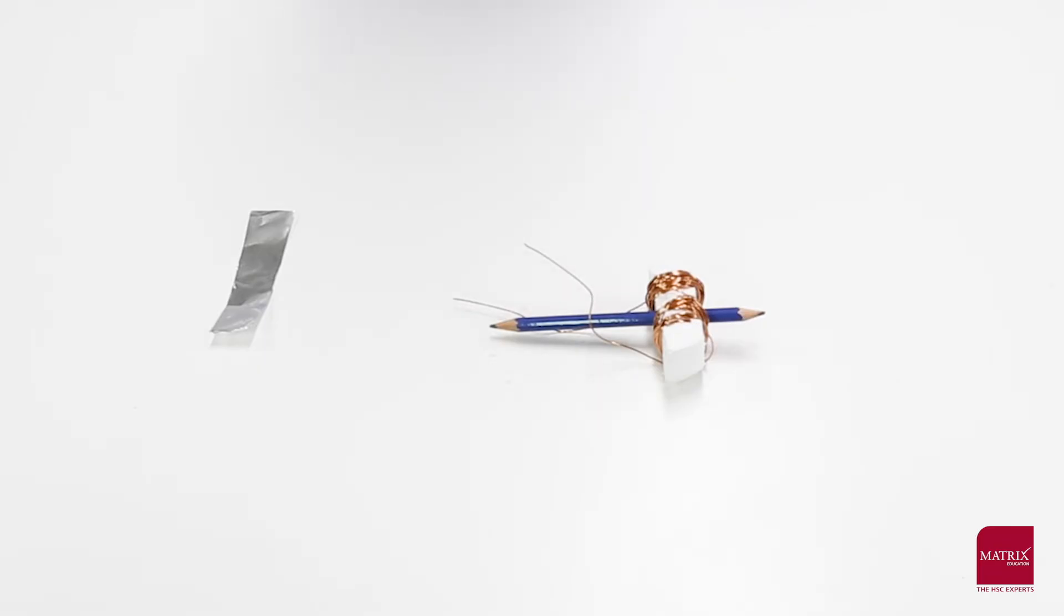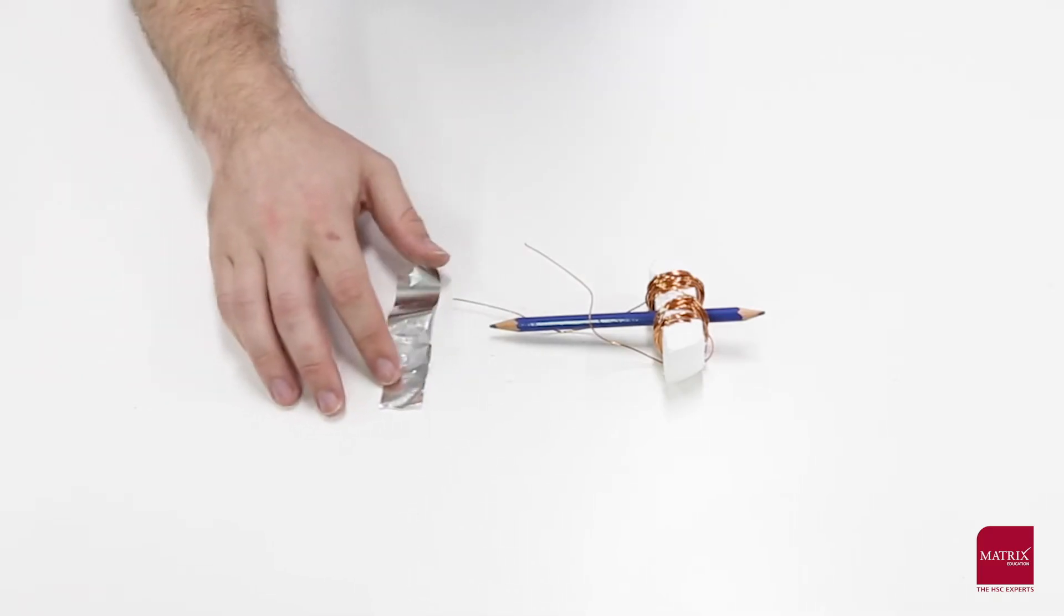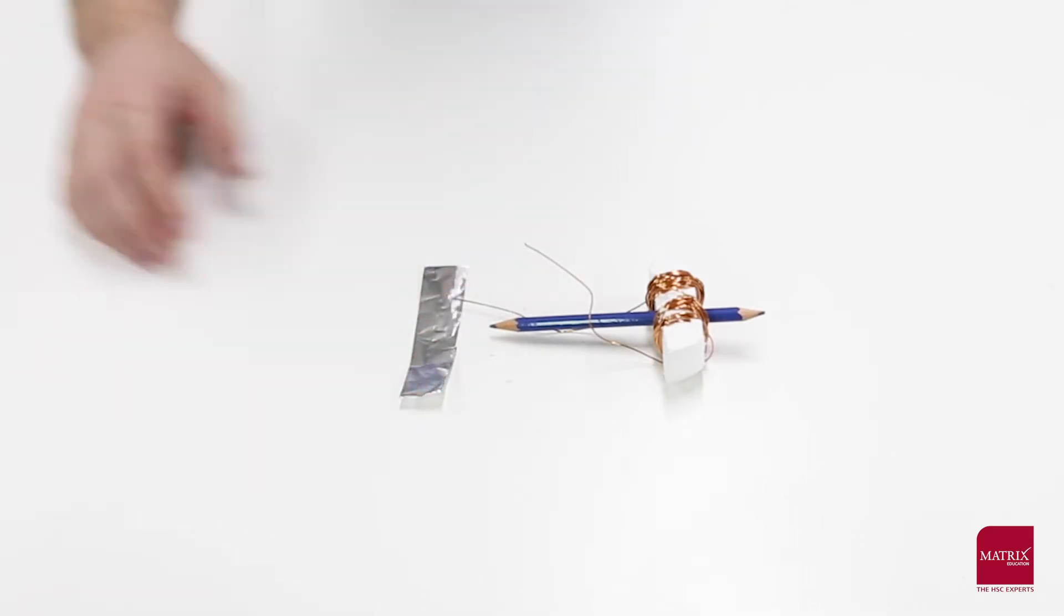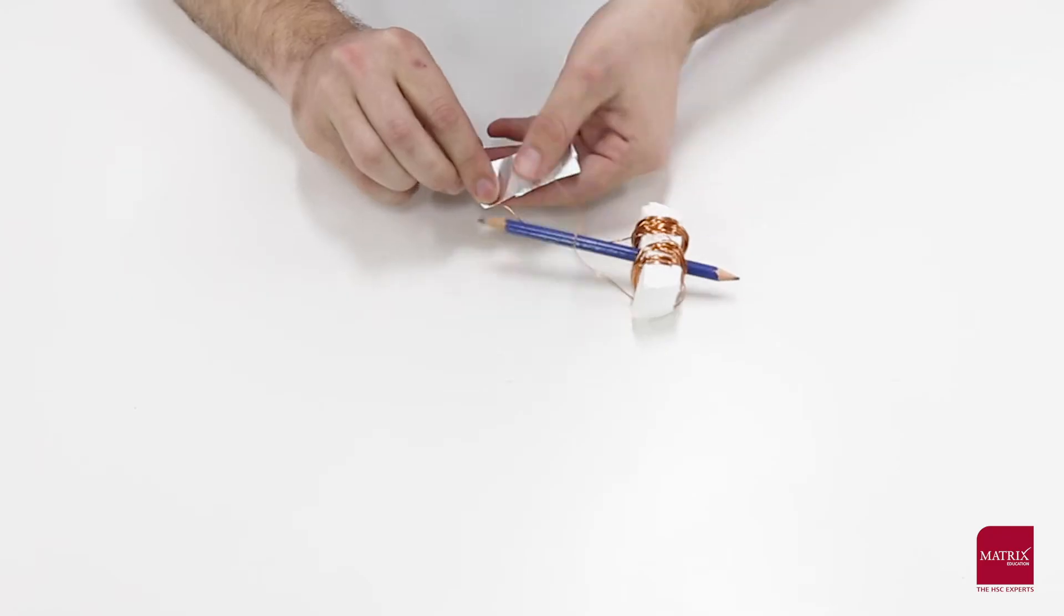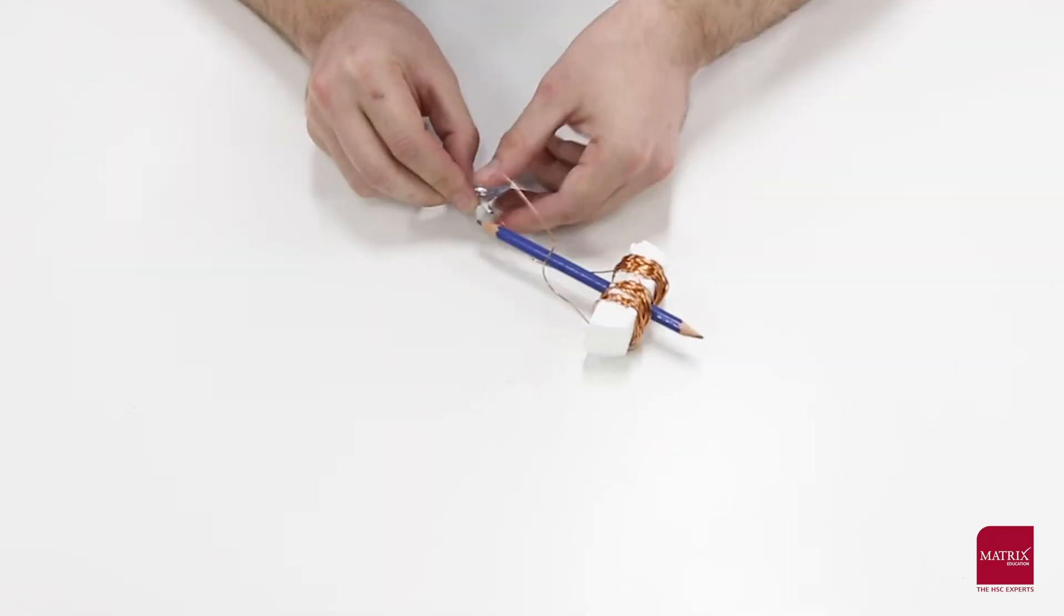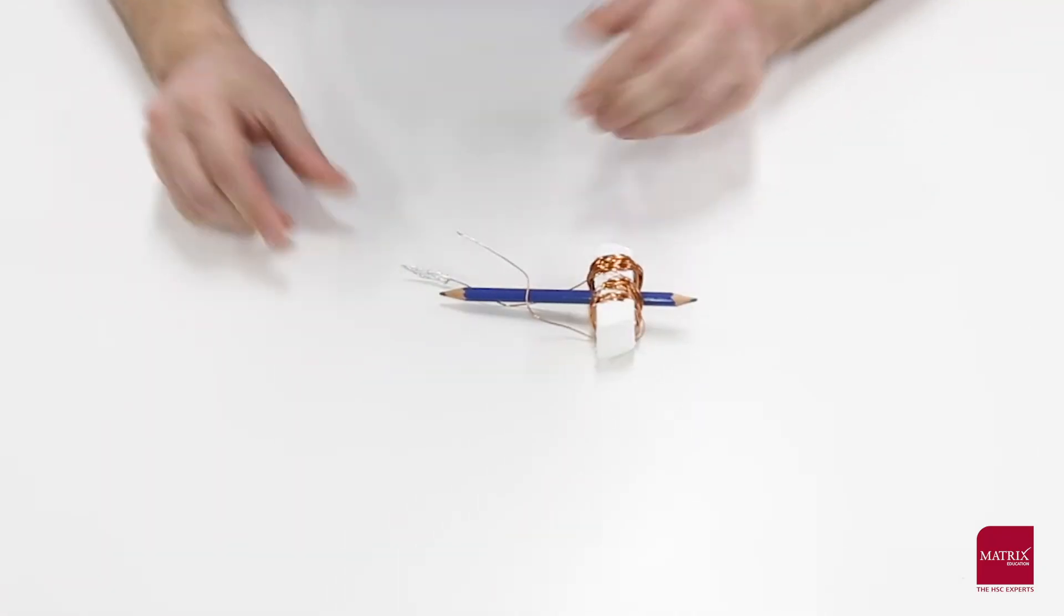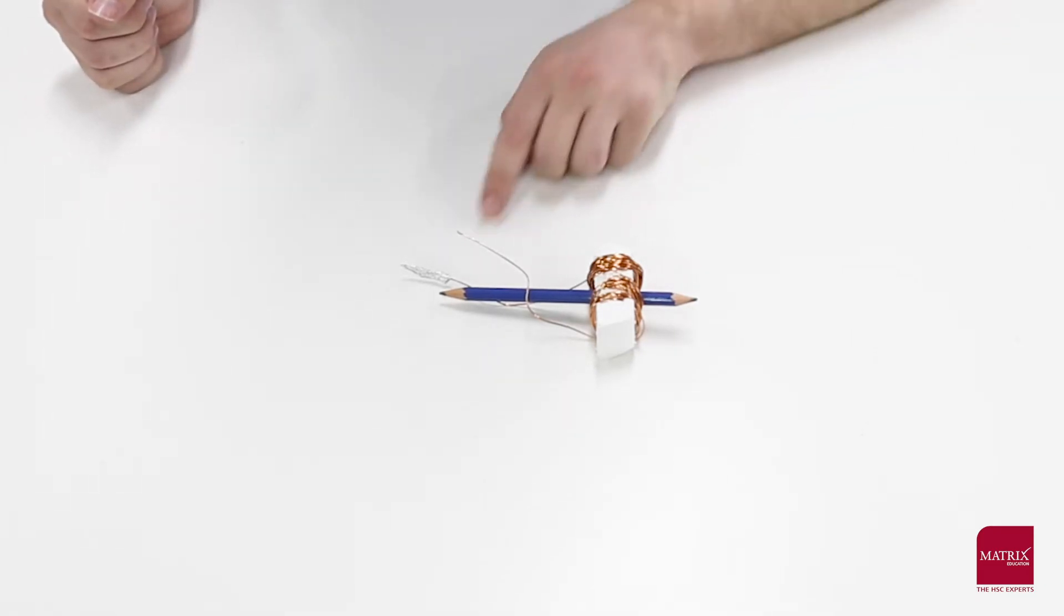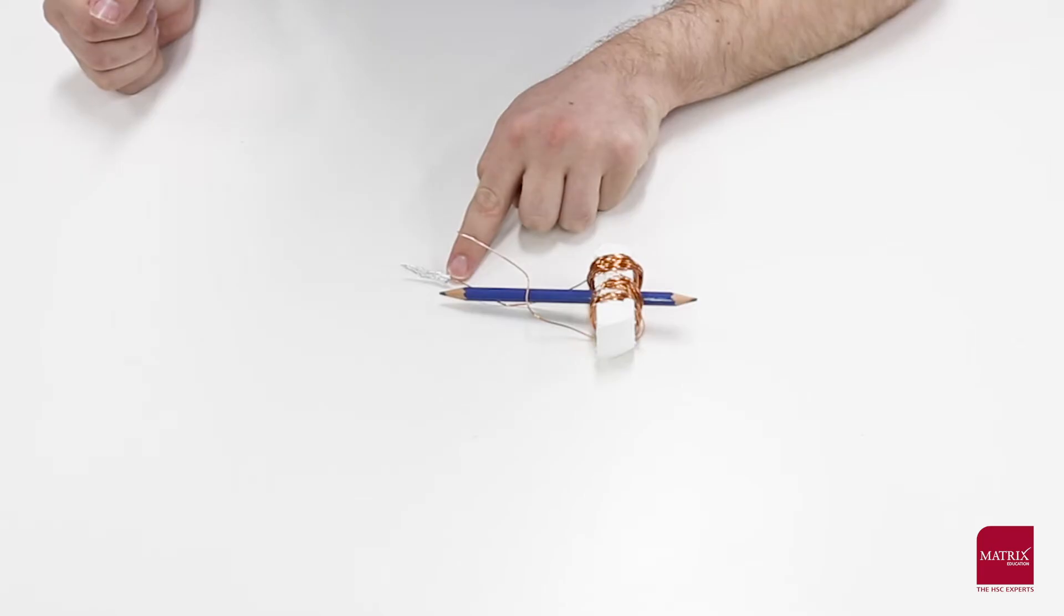Before we build our commutator we're going to improve the electrical connections of our coil. For this we're going to take some aluminum foil and wrap it around the edges of the coil that we've stripped. Depending on how confident you are, you can use sticky tape to stick it down, but make sure you only put it just on the edge. You don't want to ruin any future electrical contact.